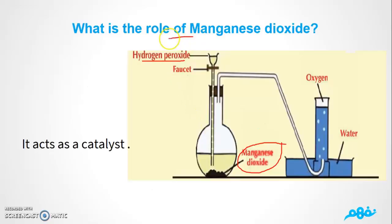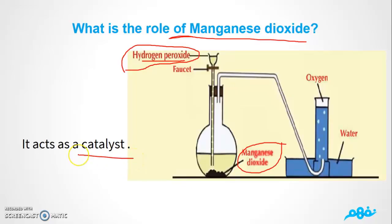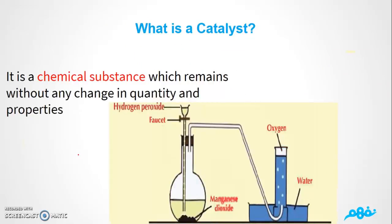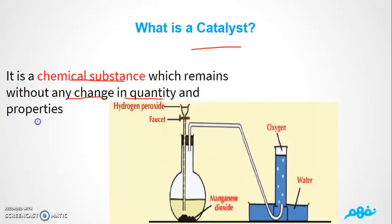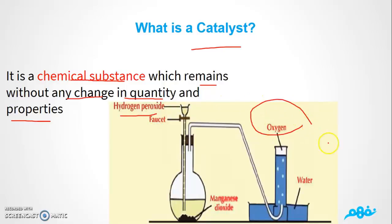What is the role of magnesium dioxide? We used magnesium dioxide because it acts as a catalyst. A catalyst is a chemical substance which remains without any change in quantity or properties. In this experiment, magnesium dioxide undergoes no change — it remains the same in quantity and properties — but it helps the hydrogen peroxide undergo decomposition and convert into oxygen and water.